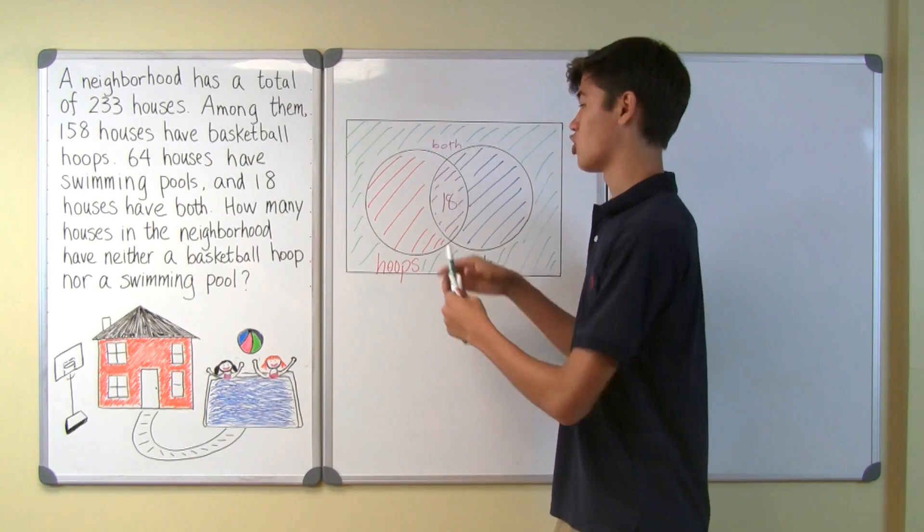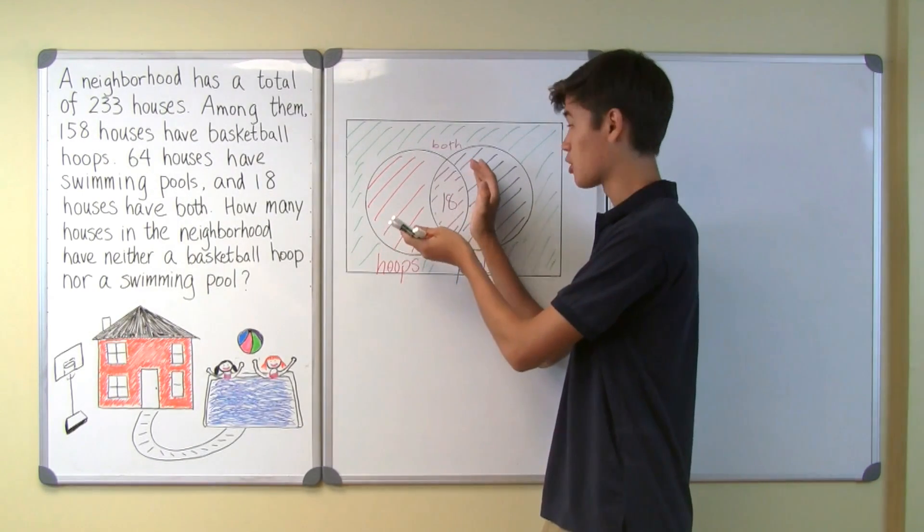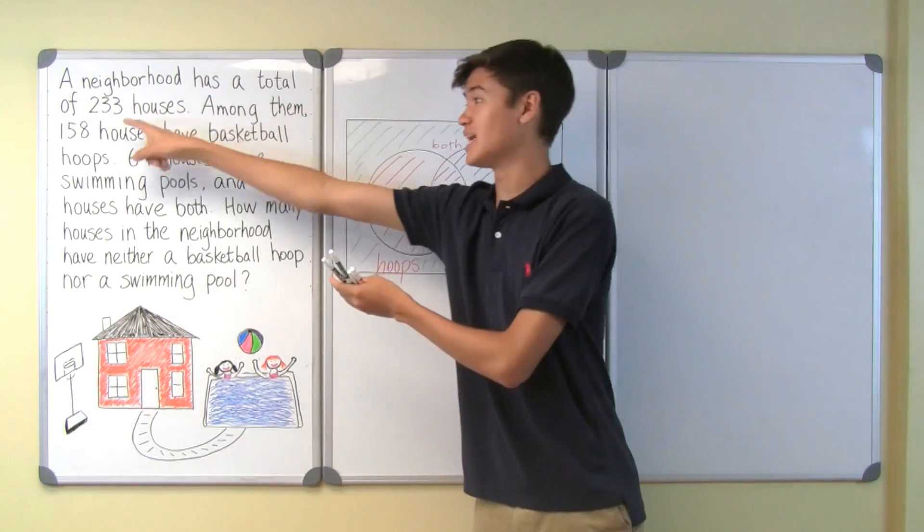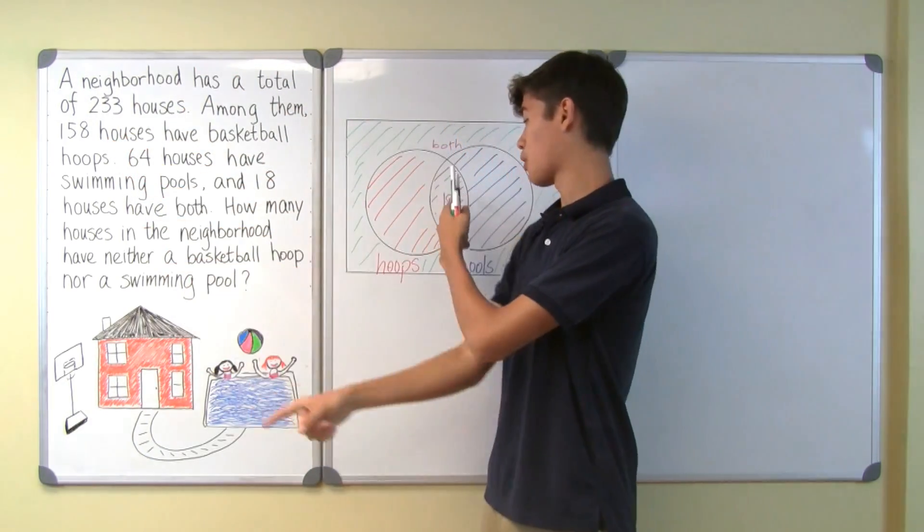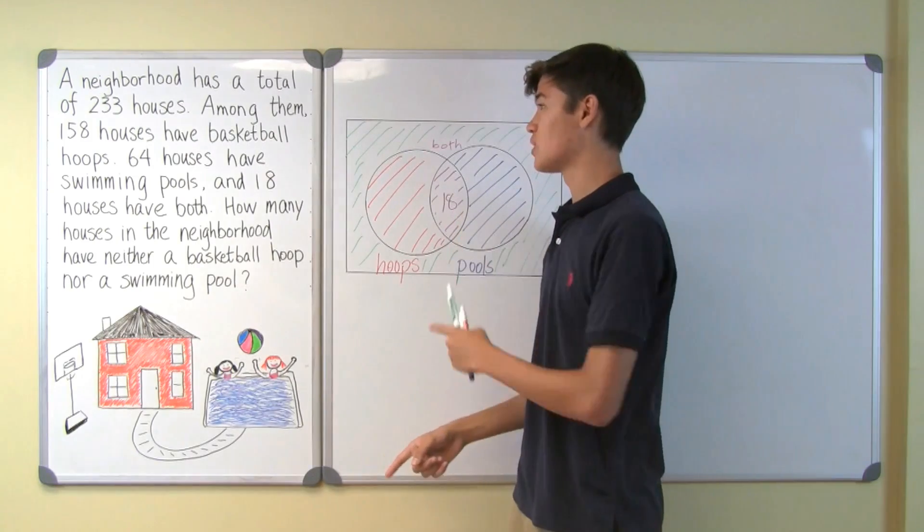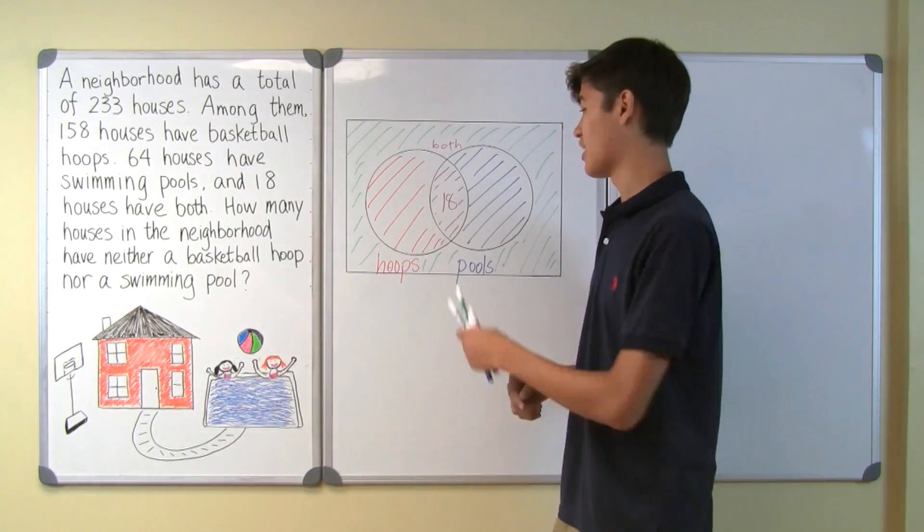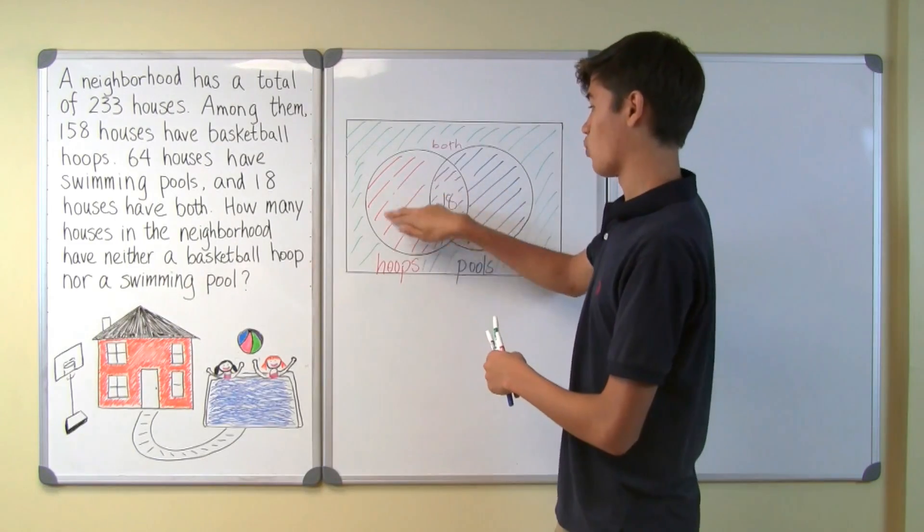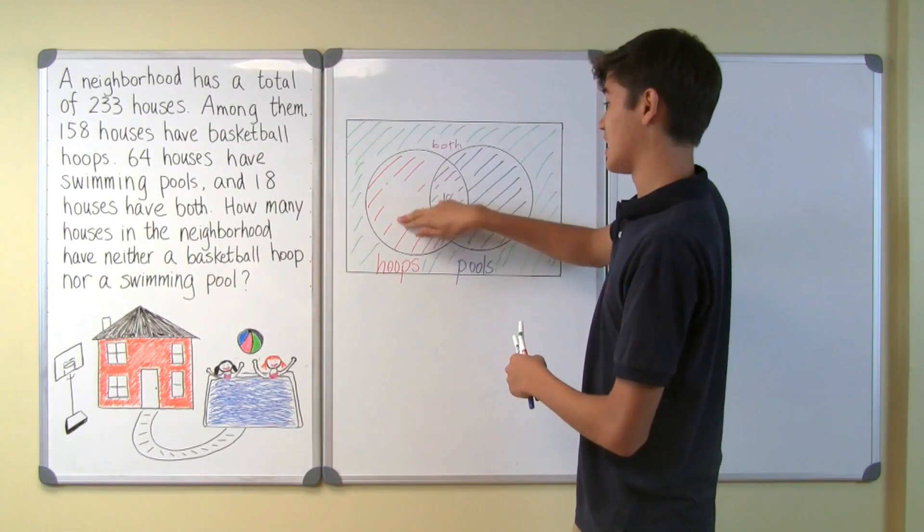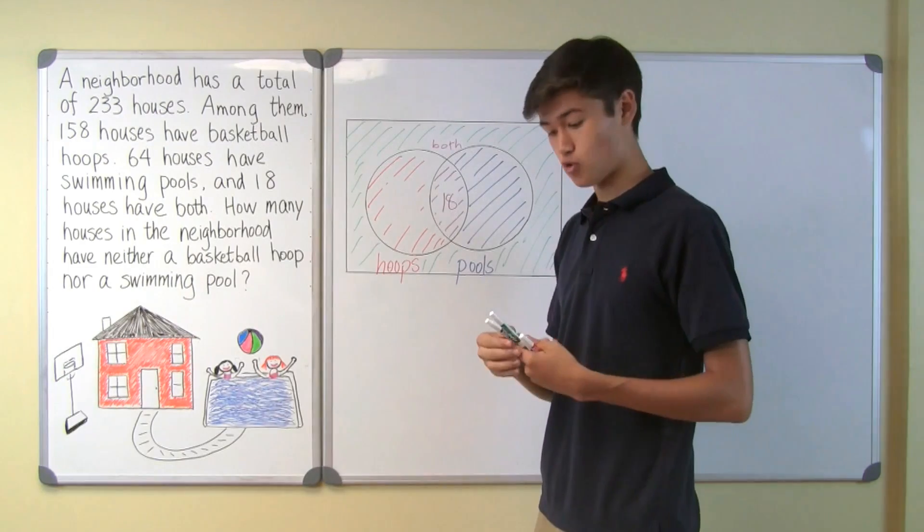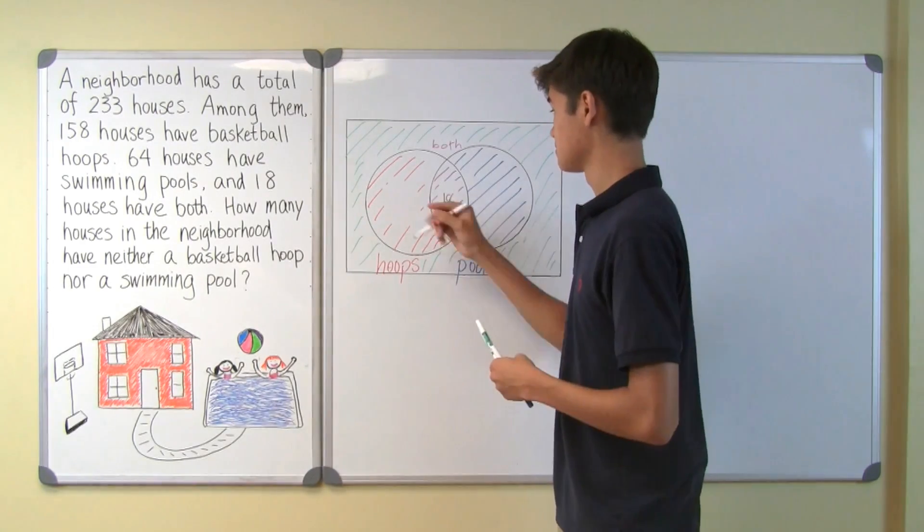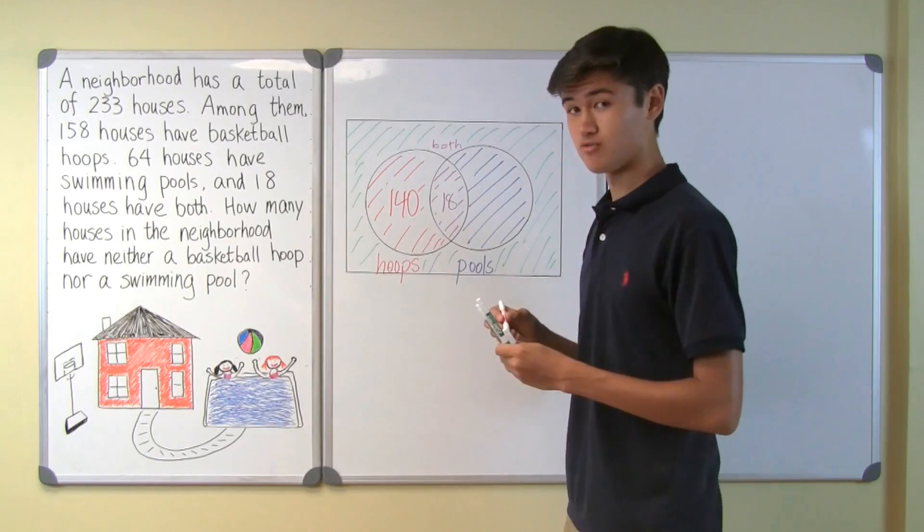Since we know that the whole red and purple circle is 158 houses and the purple section is 18, we can simply do 158 minus 18 to find the red section. And 158 minus 18 is 140.